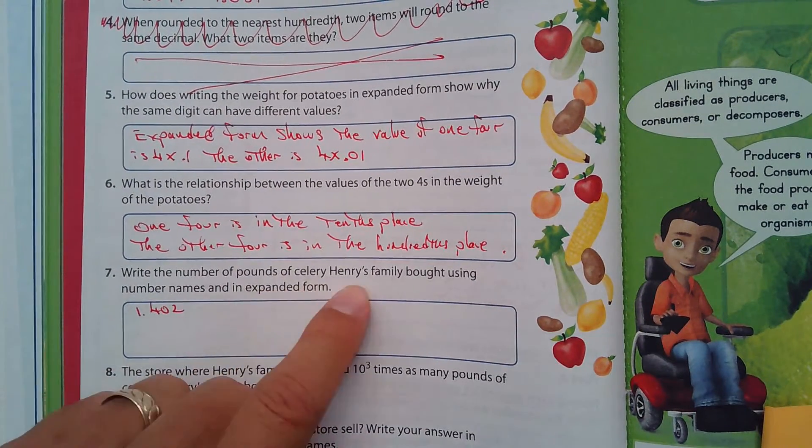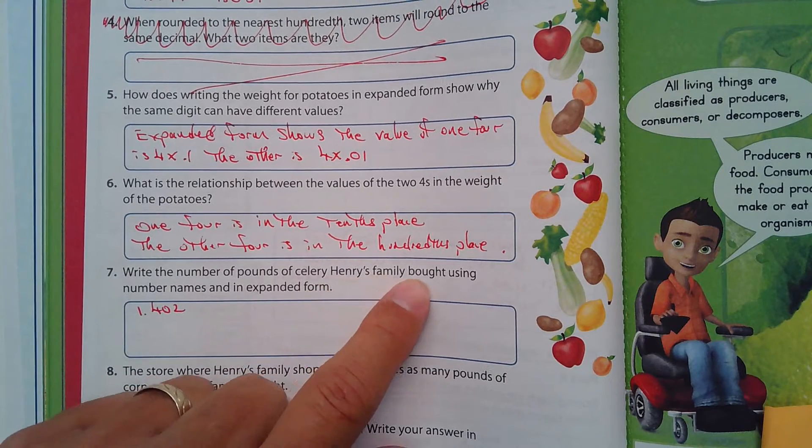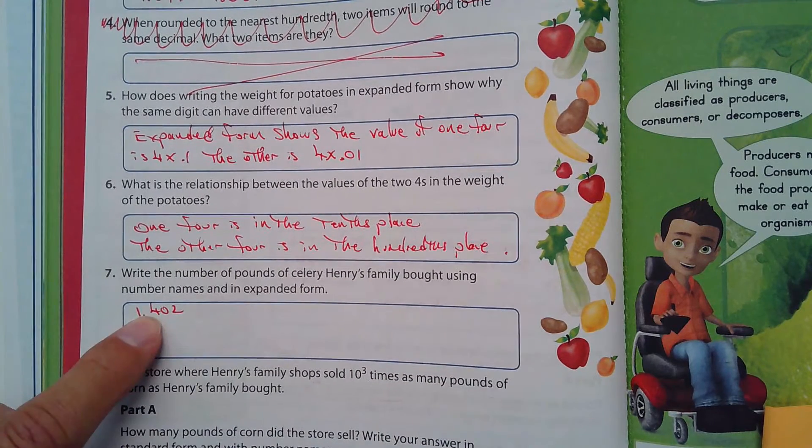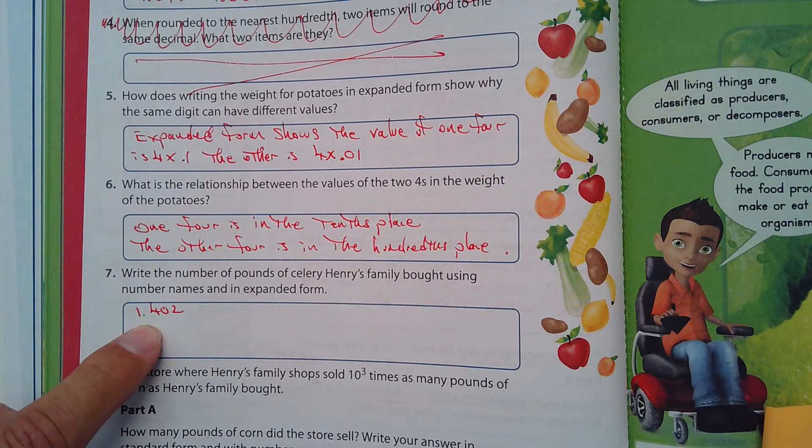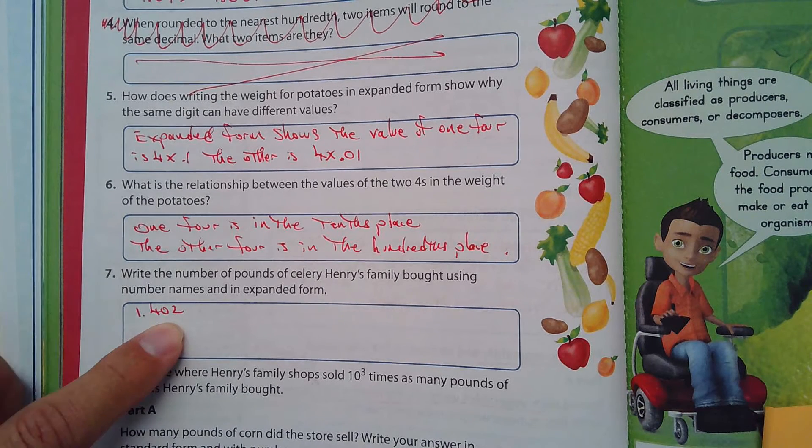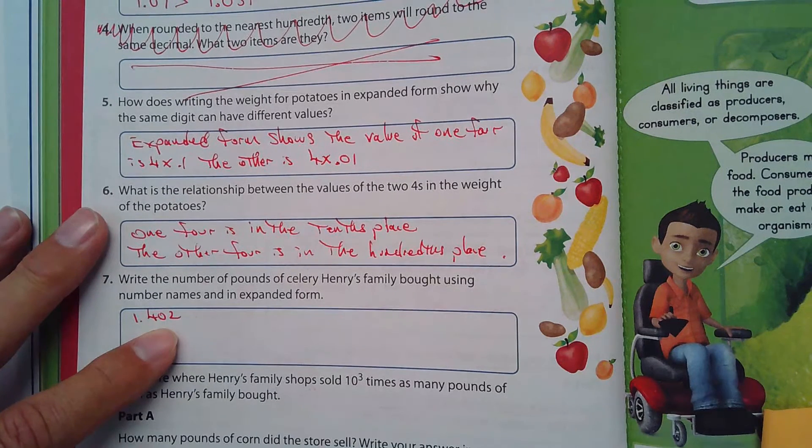Let's see here, write the number of pounds of celery Henry's family bought using number names and in expanded form. So there it is, it's 1.402, so that's standard form. So we need to do that in expanded form.